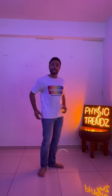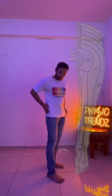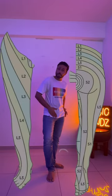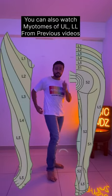Lower limb dermatomes in one minute. It starts with L1 starting from the back, coming in the greater trochanter and going to the groin area.